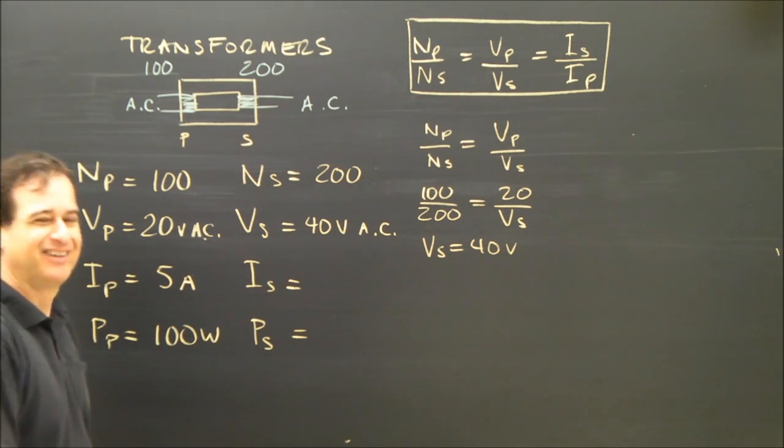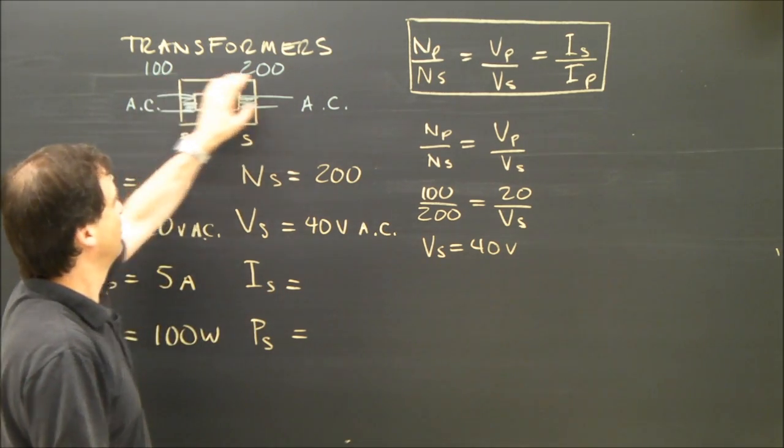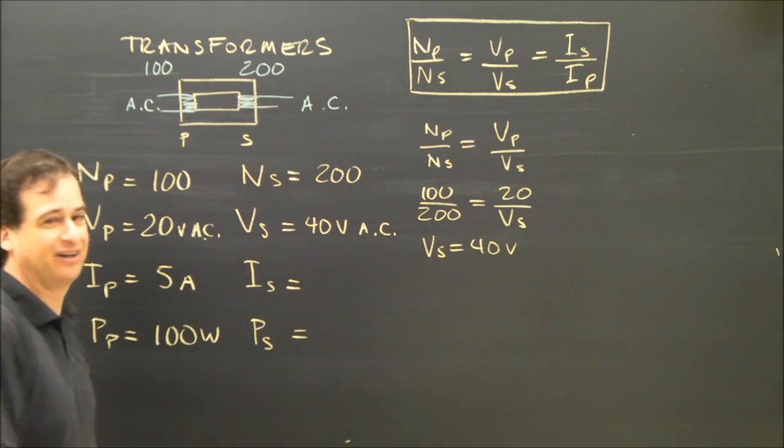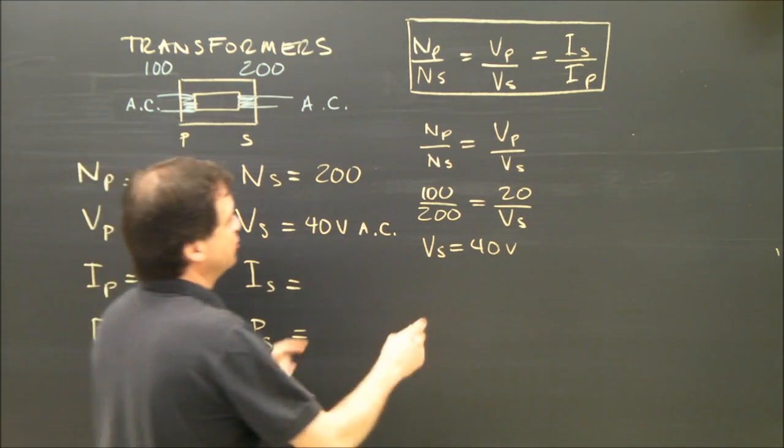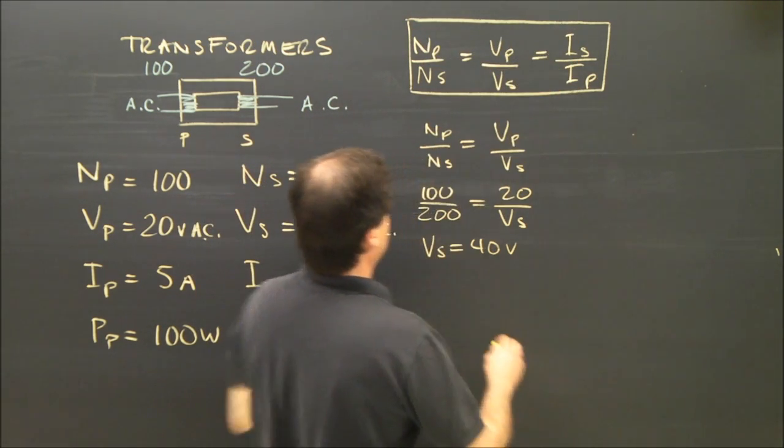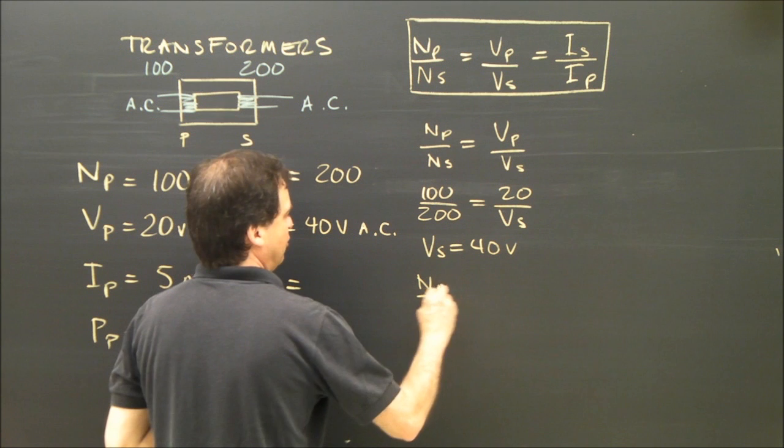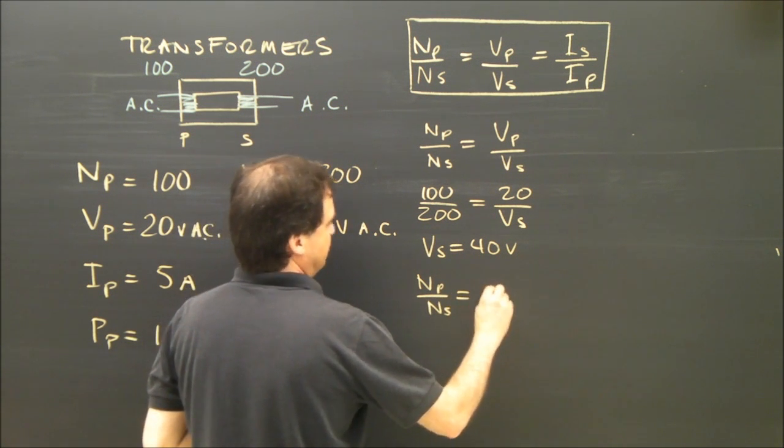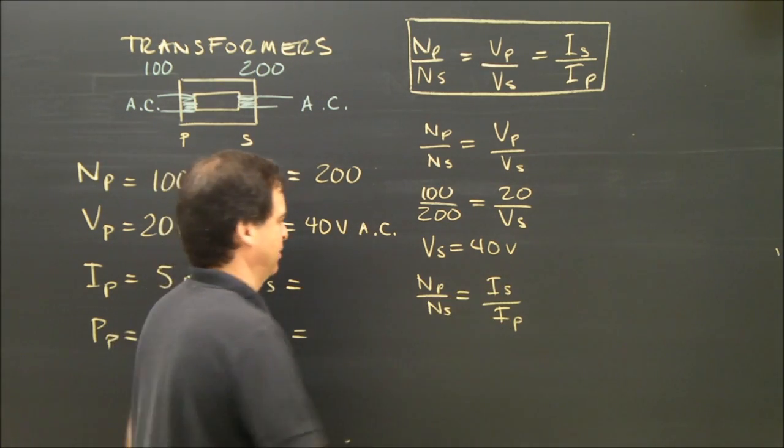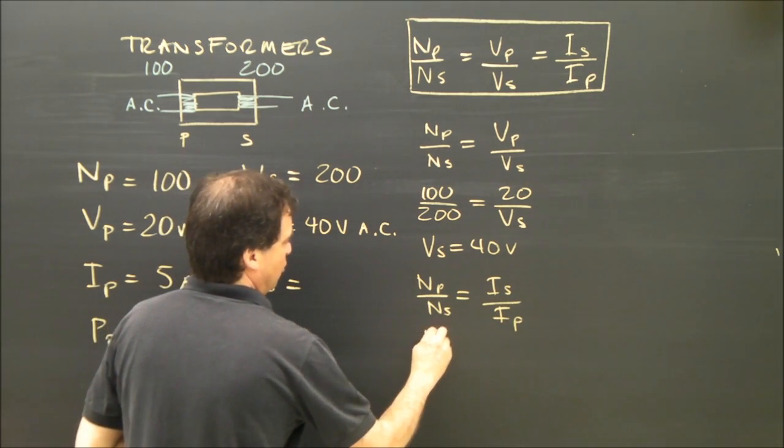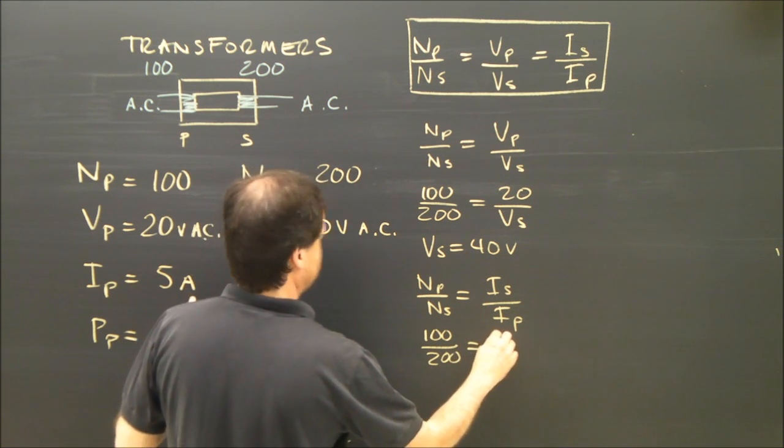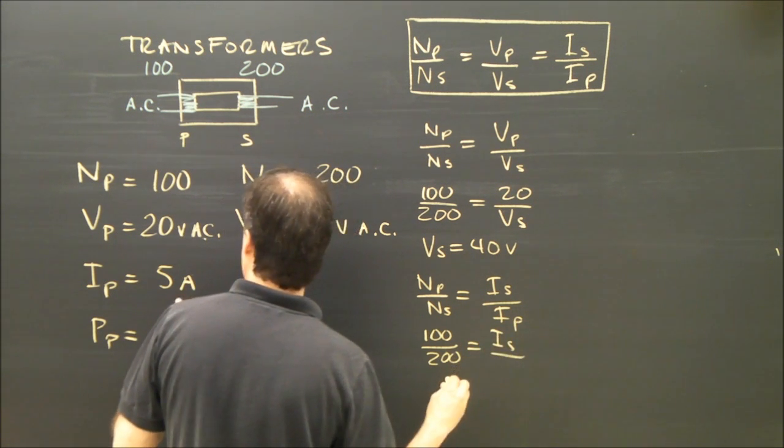Alright, how do I find the current? Well, again, the ratio tells me 100 to 200, I'm doubling the voltage. So the current should be cut in half, so half of 5 is 2.5. But what I'm going to do is I'm going to say, okay, I'm going to use this part of the formula and this part of the formula. So the number of the primary over the number of the secondary is equal to the current of the secondary over the current of the primary. Remember, this is the opposite. Don't make a mistake.